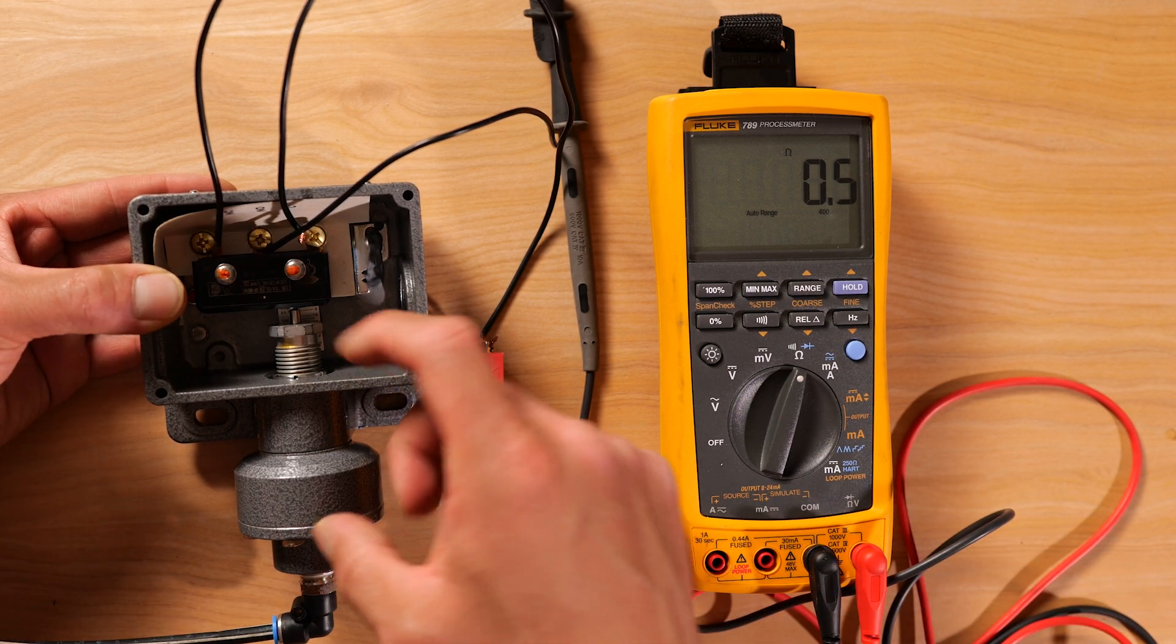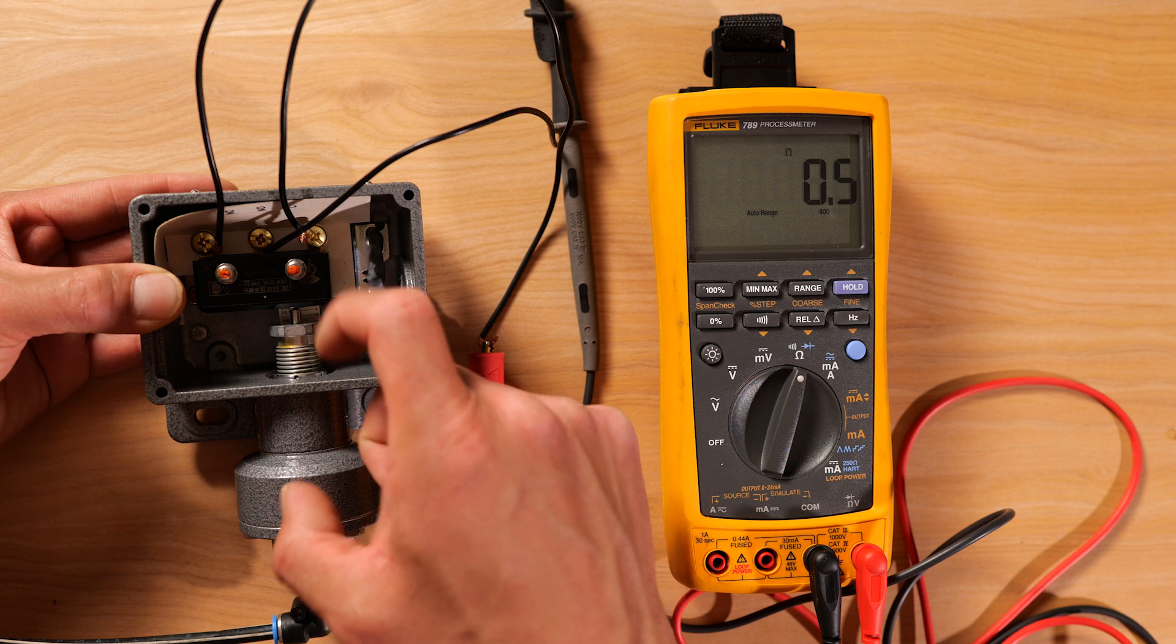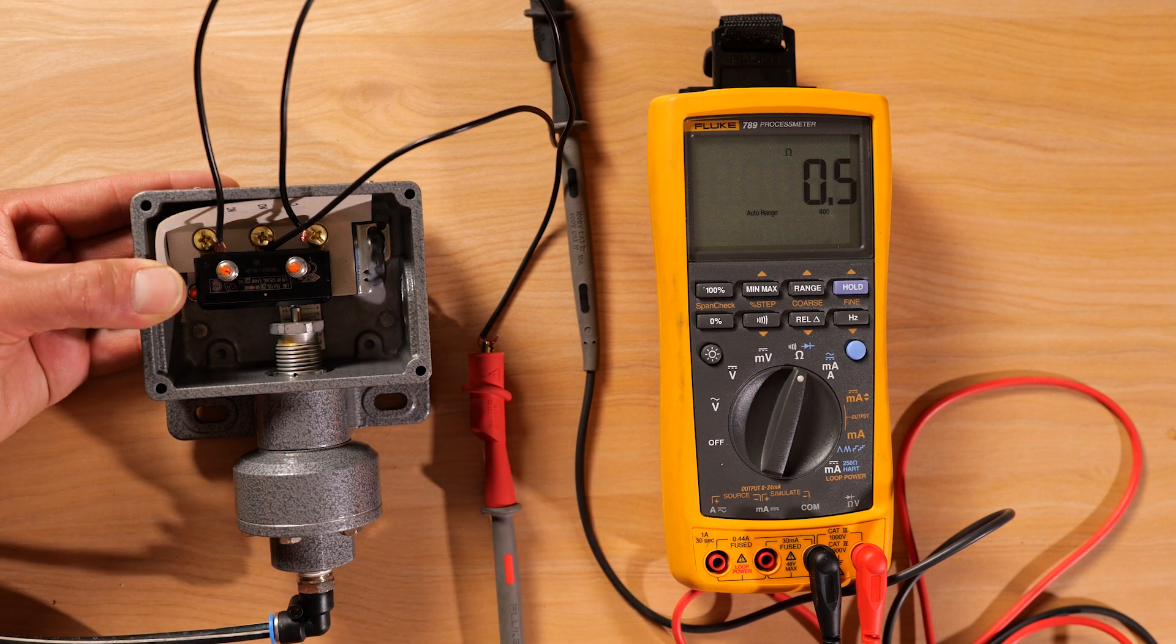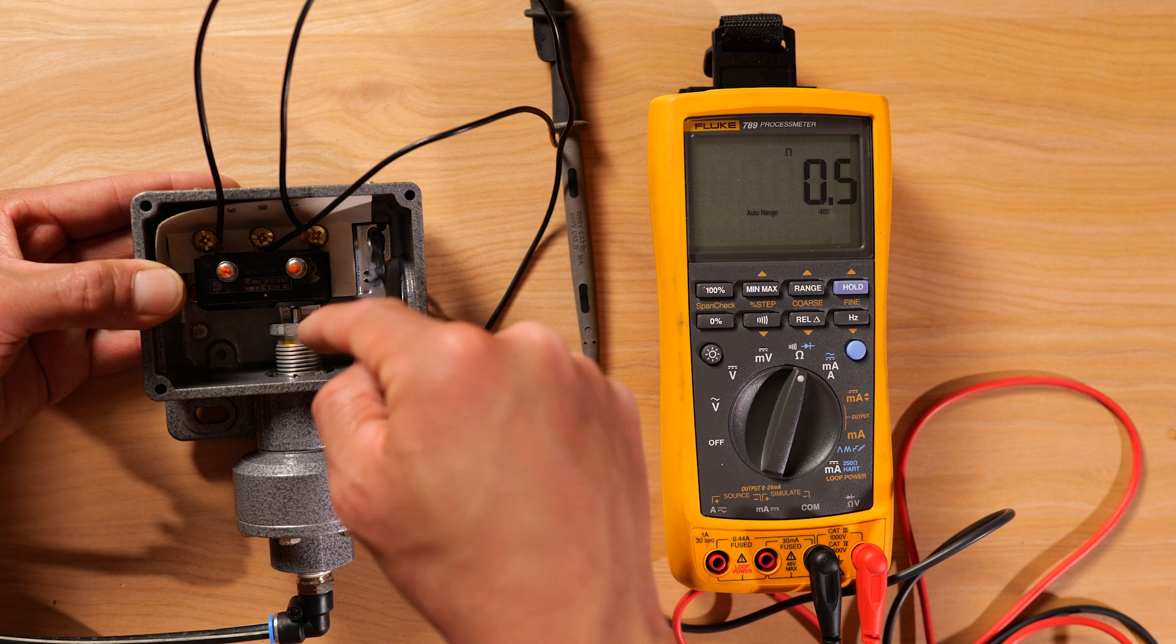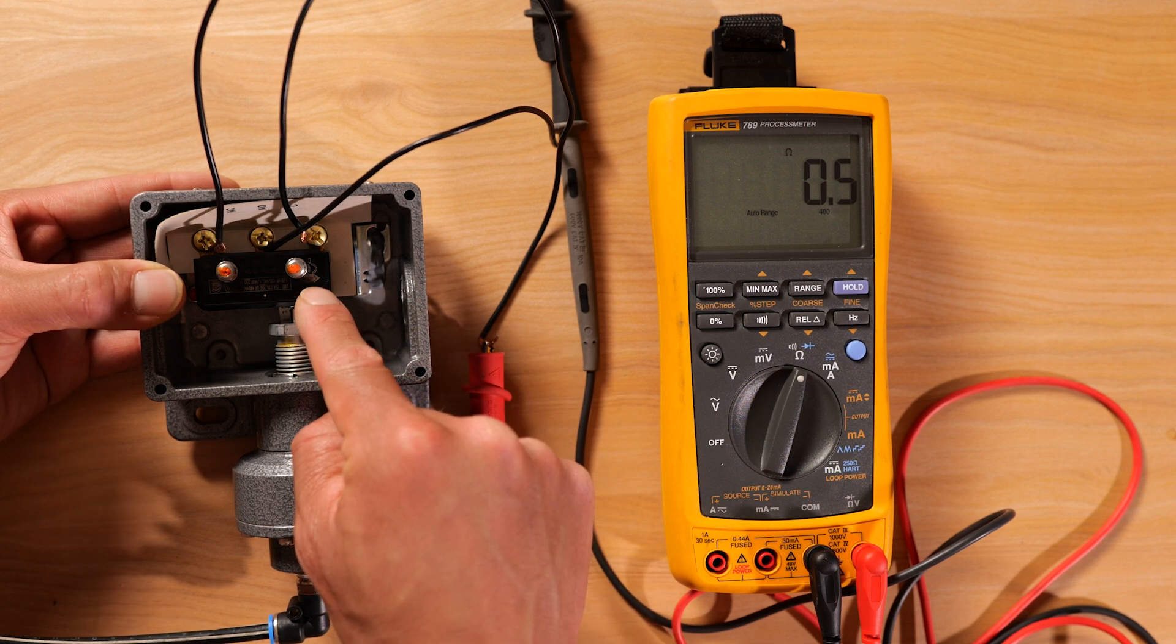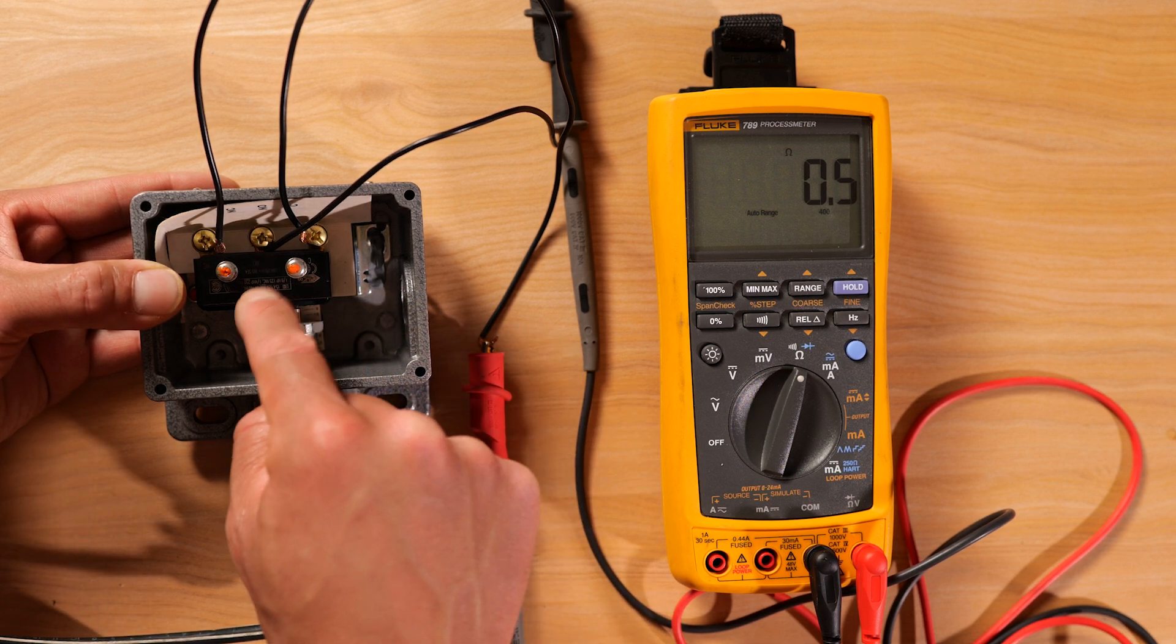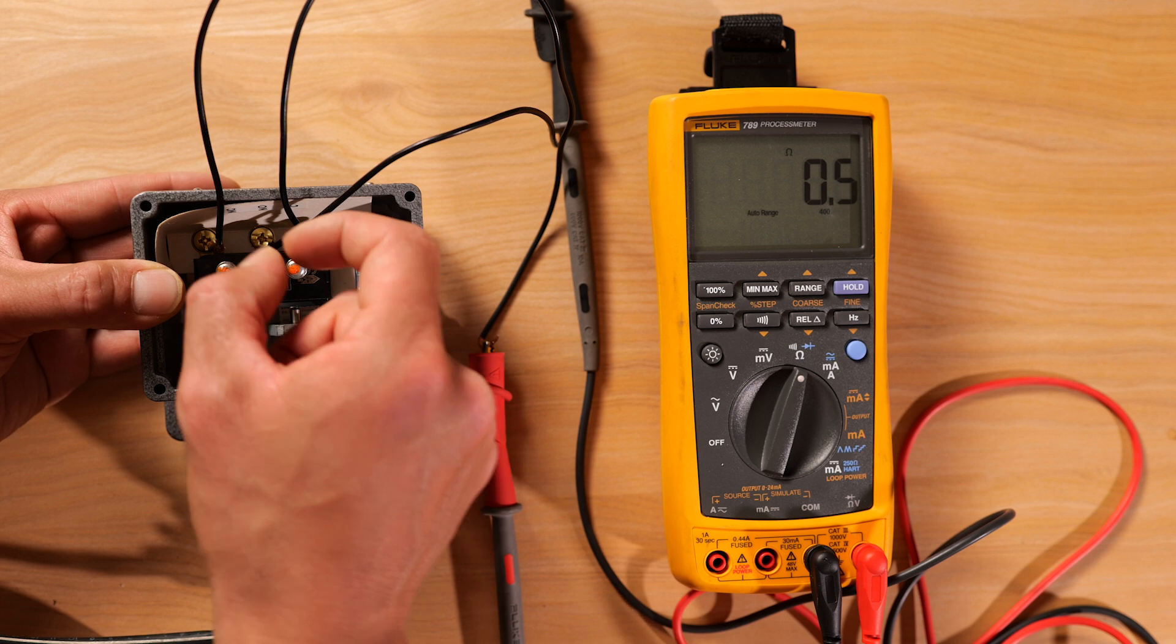And by going down, you're applying more pressure on the spring. By applying more pressure on the spring, now you need more process pressure to overcome that spring to push this nut up. That way it applies pressure on this micro switch, which then changes states.